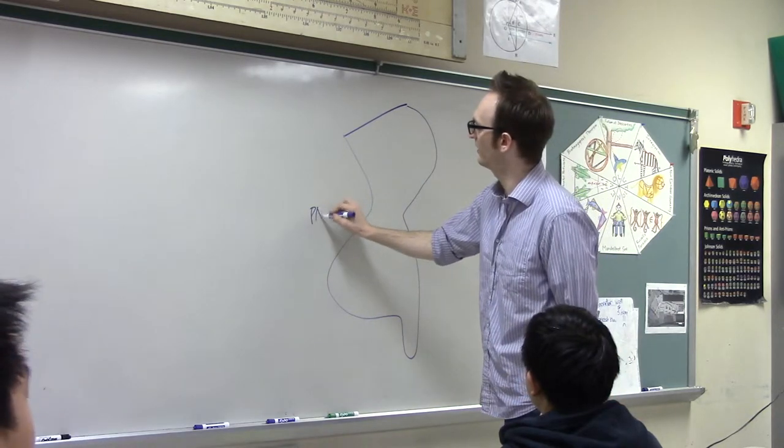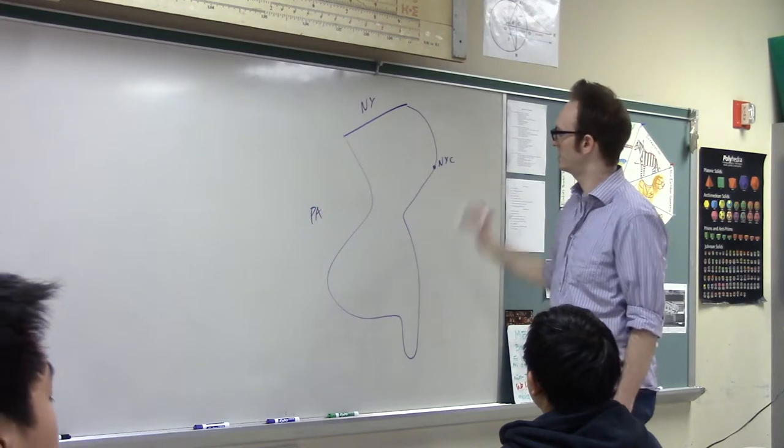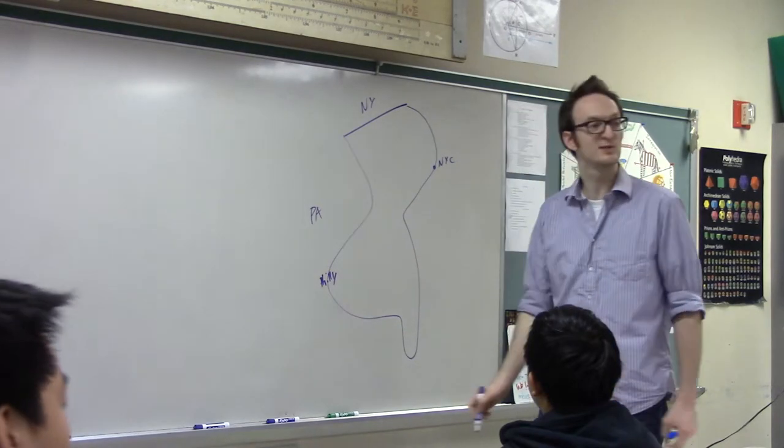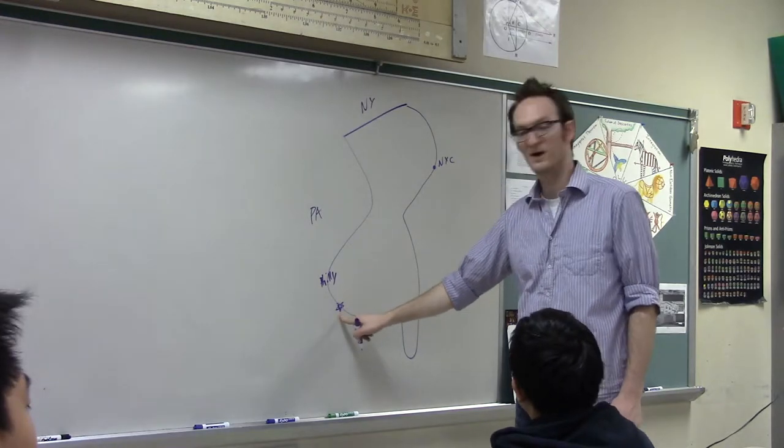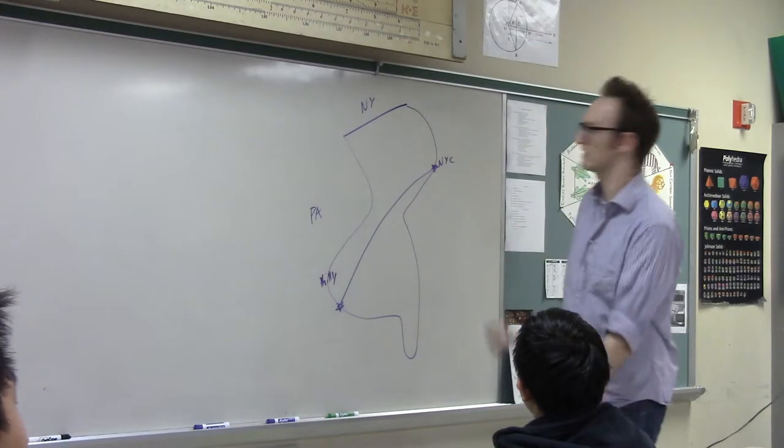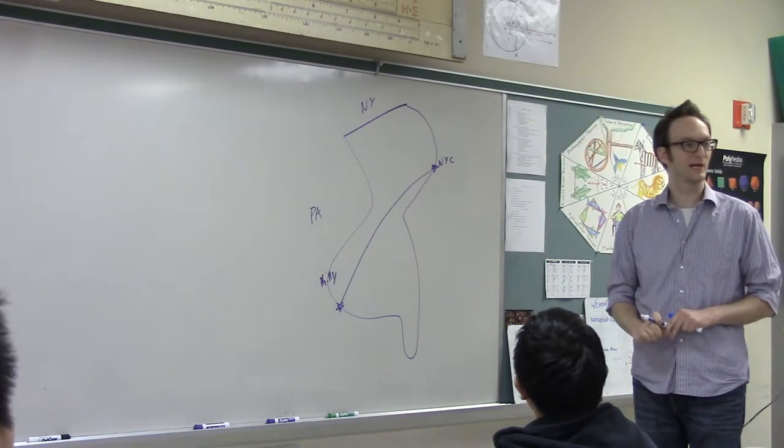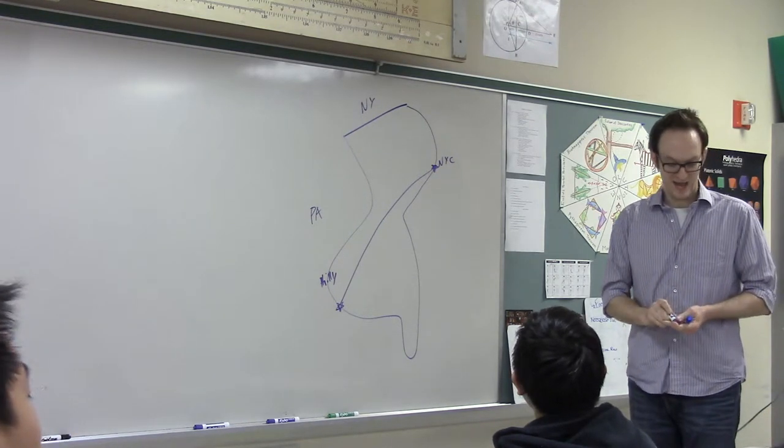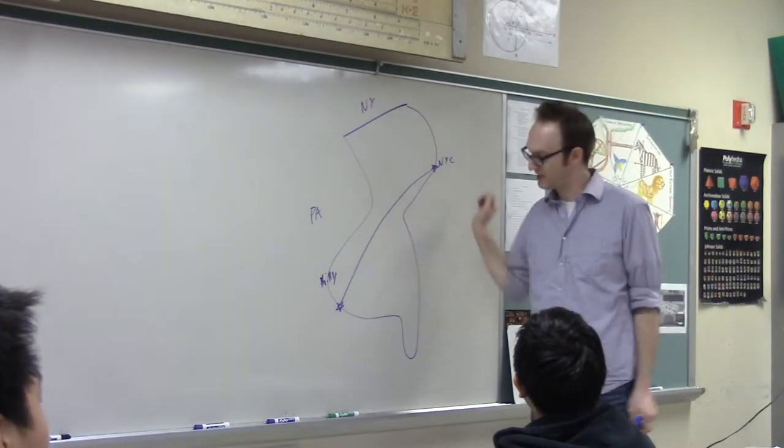This is Pennsylvania over here. This is New York. Right here is New York City. And down here is Philly, more or less. And there is this road called the New Jersey Turnpike. And the New Jersey Turnpike starts over here, at Delaware. And it ends over here in New York City. And it runs kind of through the whole state like this. So, it's a big highway. And it's meant for people to get the hell through New Jersey as fast as possible to New York City. And in order to do that, it cuts across the entire state.